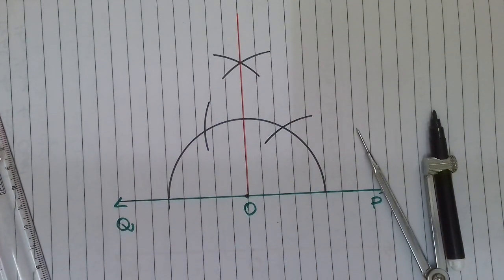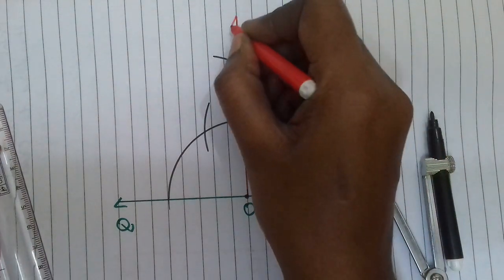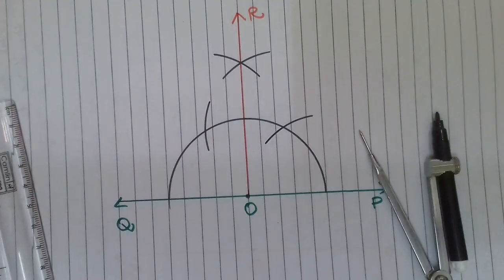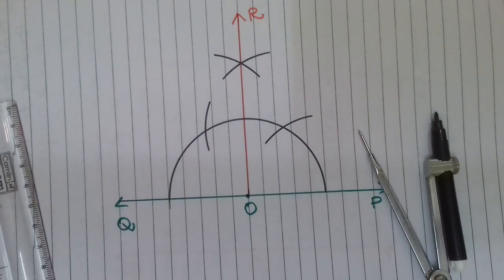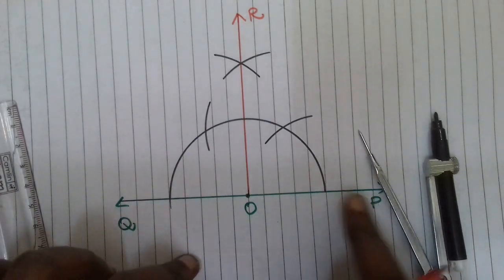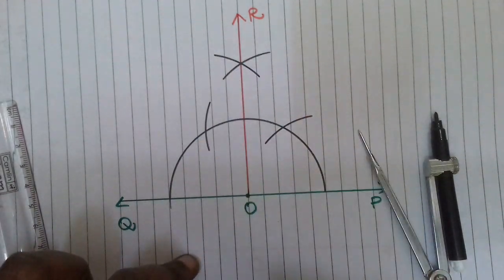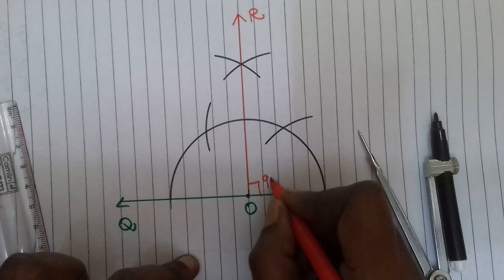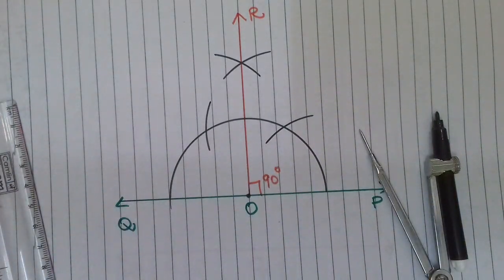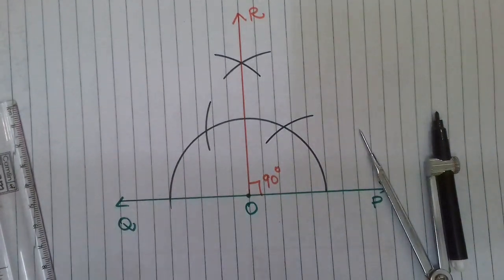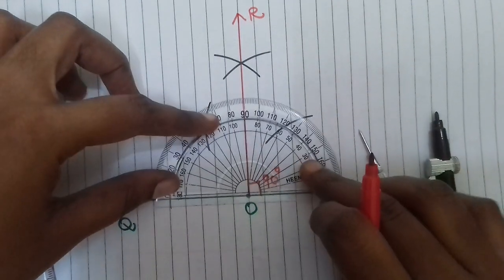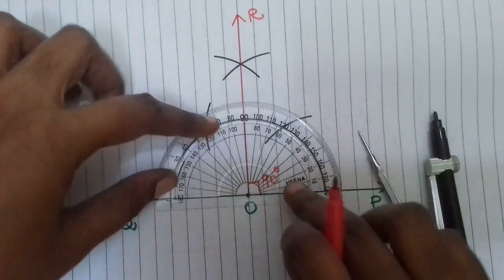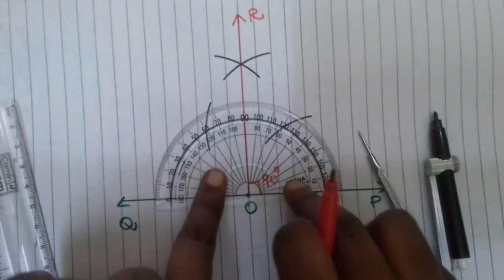This naming point is R. So the angle POR is the 90-degree construction. Using a protractor to measure — it is exactly 90 degrees.